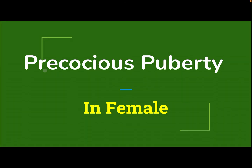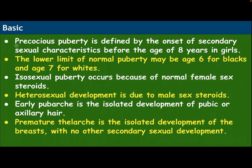Hi everyone. Our subject today is Precocious Puberty in Female. Precocious puberty is defined by the onset of secondary sexual characteristics before the age of 8 years in girls. The lower limits of normal puberty may be age 6 for blacks and 7 for whites. Isosexual puberty occurs because of normal female sex steroid, while heterosexual development is due to male sex steroid. Early pubarche is the isolated development of pubic or axillary hair. Premature thelarche is the isolated development of the breast with no other secondary sexual characteristics.